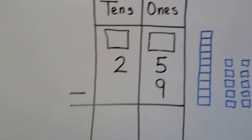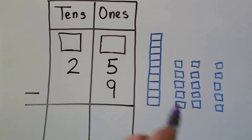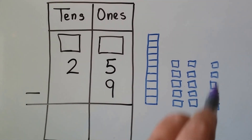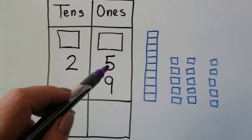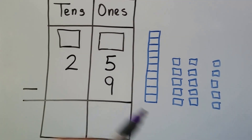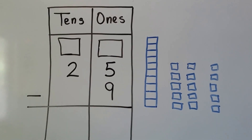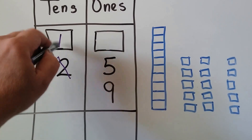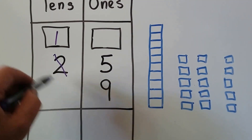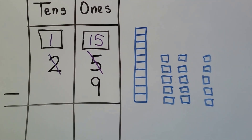Let's try it one last time. We have twenty-five minus nine. We have one ten, two tens, and five ones, and we need to take nine away. This nine is larger than that five, so we need to regroup. We broke a ten up into ones. We took one of the tens away and it became ones. Now we have one ten, and we gave it to the ones place.